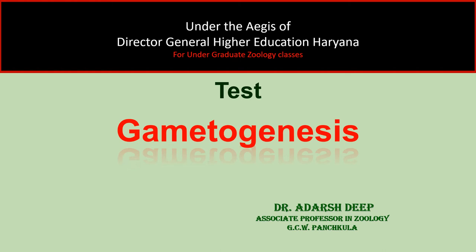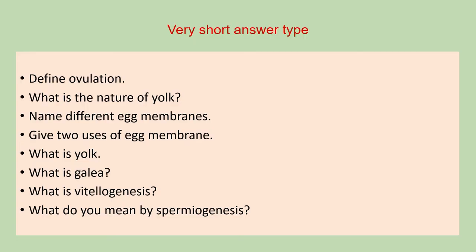Hello everyone, I am Dr. Adarsh Deep. In today's lecture, you studied about gametogenesis. This topic covers the detailed process of formation of gametes — ovum and sperm — and also tells about their hormonal control. Now, in this session, we present some important questions related to this topic. The first category of questions are short answer questions, which you have to answer in two to three lines. These questions will cover the first compulsory question of your paper.